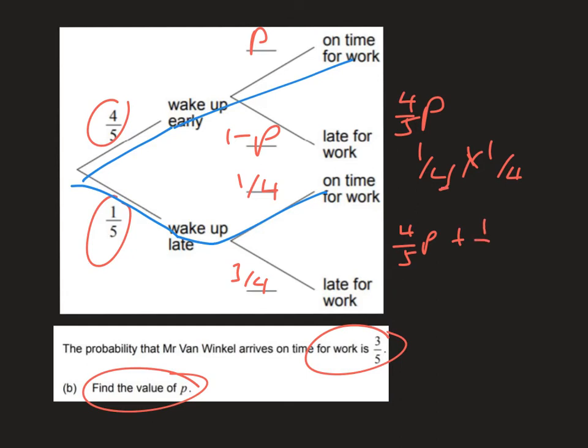plus one over 20 is equal to three-fifths. So we can rearrange that to say that four-fifths P equals three-fifths, which is going to be the same as 12 over 20, and then take the 1 over 20 over to